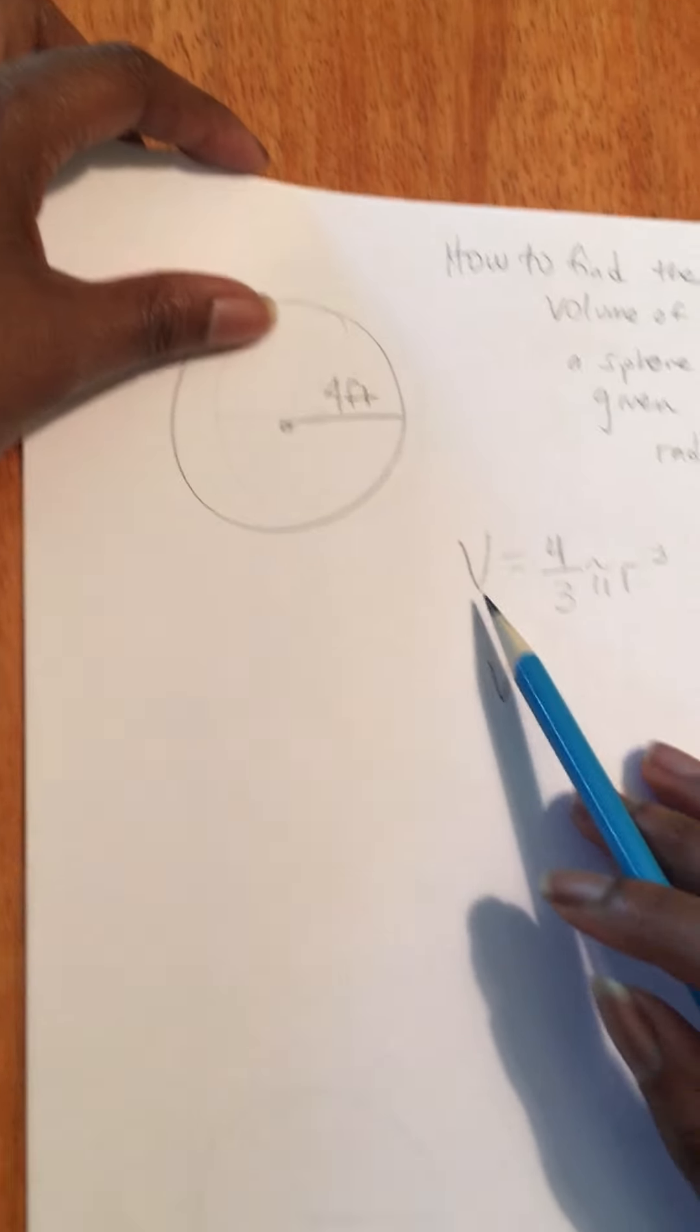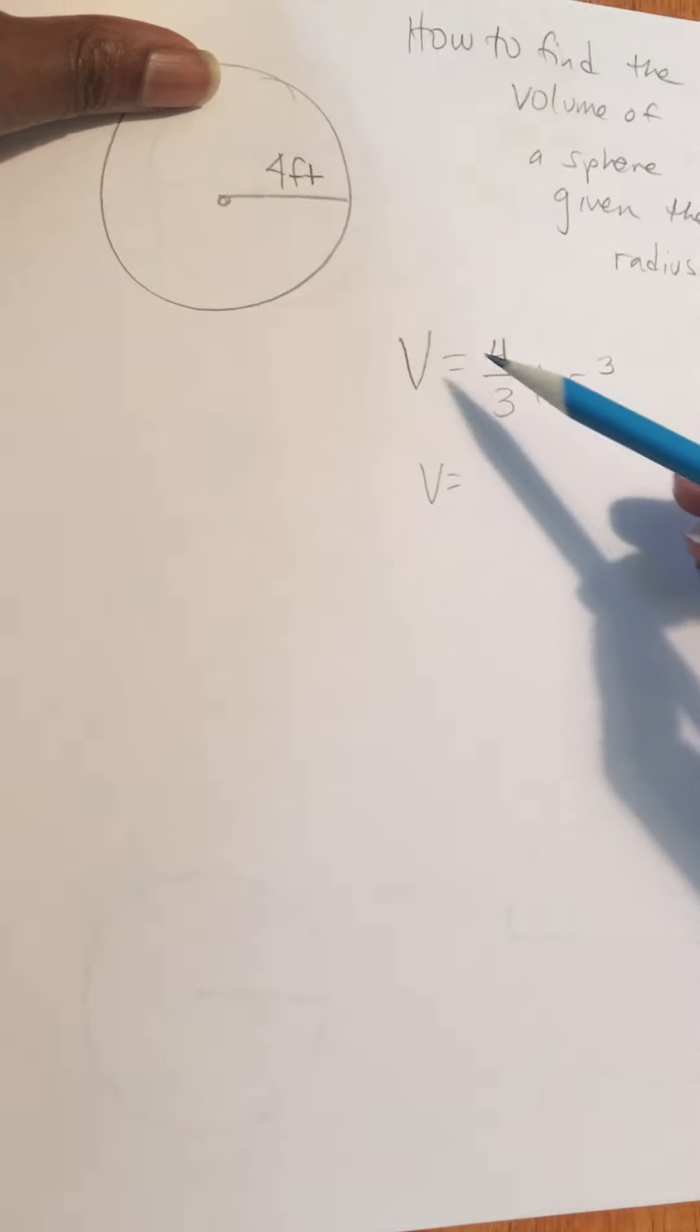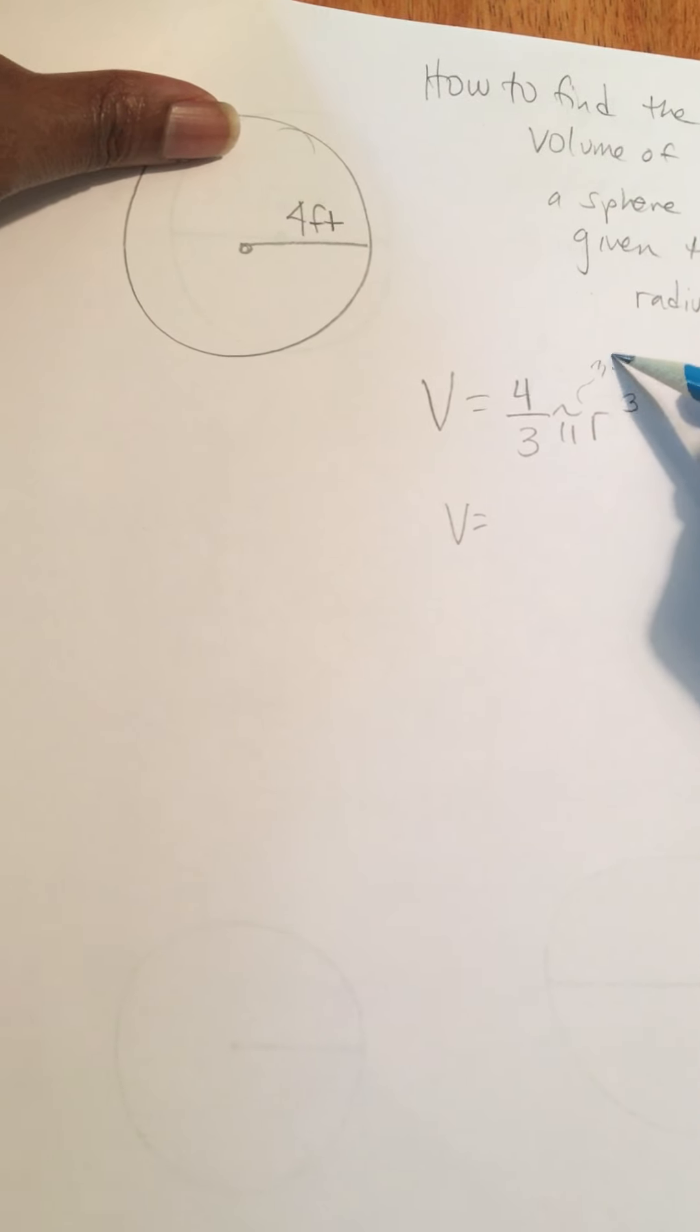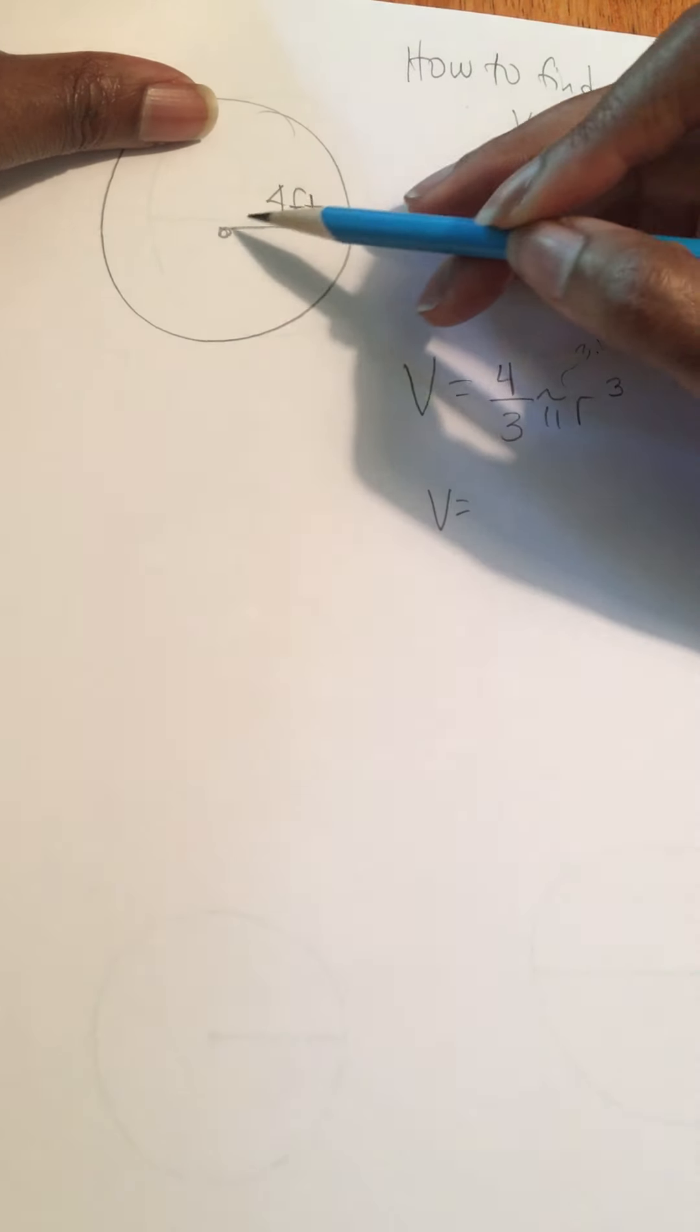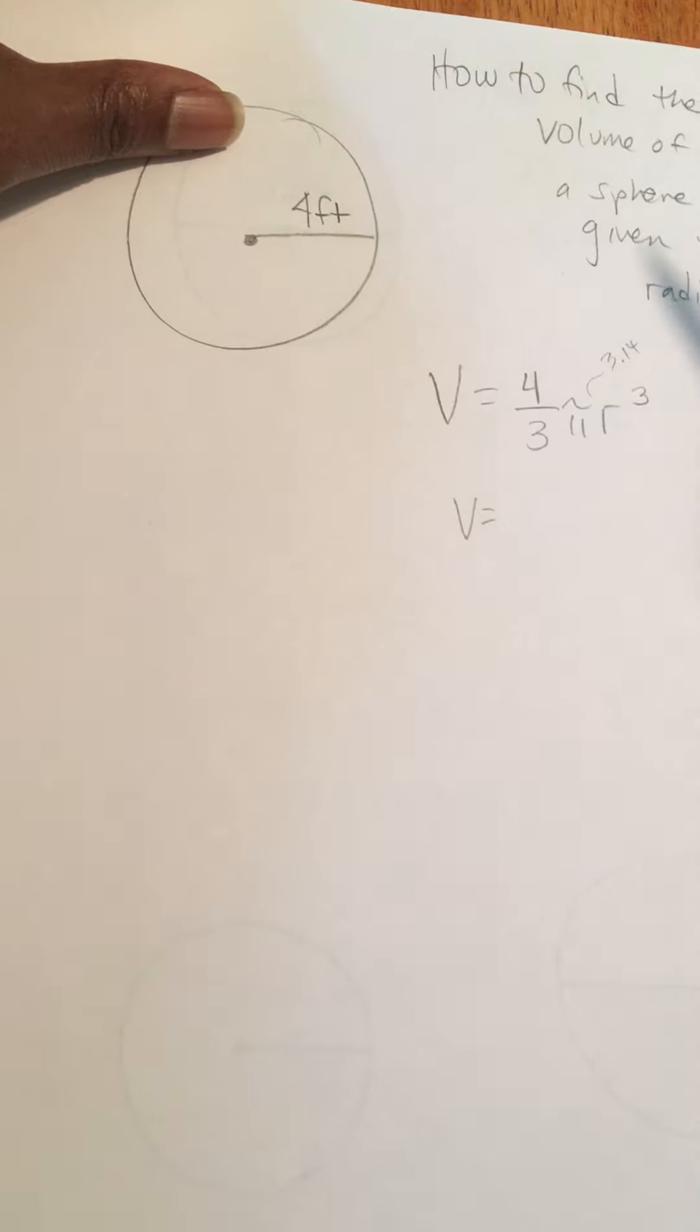Our equation is V, or volume, is equal to 4 thirds pi R cubed, where pi is 3.14, what we're going to use, and the radius is going to be from the center to the edge of the circle.